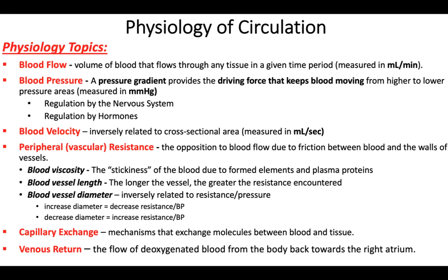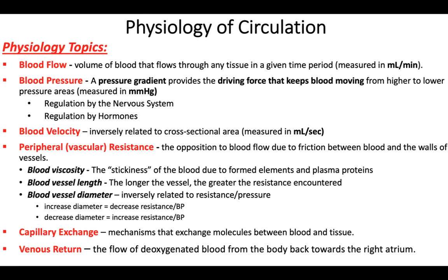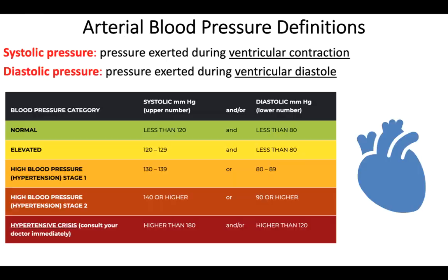We'll also talk about capillary exchange — the mechanisms that exchange molecules between blood and tissue, including how things exit and enter blood at capillaries. Another topic is venous return: the flow of deoxygenated blood in systemic veins back to the right atrium. This is important because we don't want pooling of blood in the venous circulation, which can happen quite often in elderly individuals or people with poor circulation.